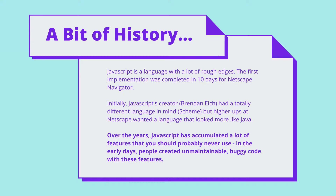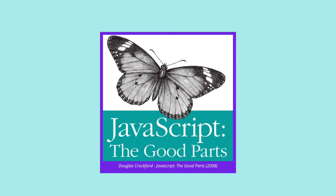Before we move on, let's dig into some JavaScript history. JavaScript has a bit of a reputation as being a rough language with some odd behaviors. That makes sense when you consider its history. The first version of JavaScript was written in about 10 days by Brendan Eich, who initially wanted to take it in a completely different direction. And over the years, JavaScript has accumulated a lot of features and quirks that people probably shouldn't touch, and early JavaScript code was often buggy and hard to maintain as a result.